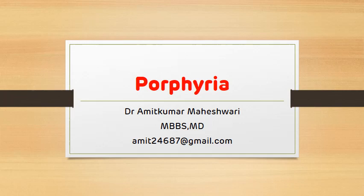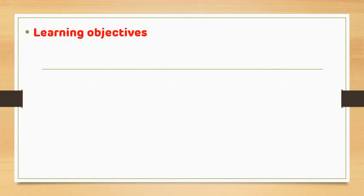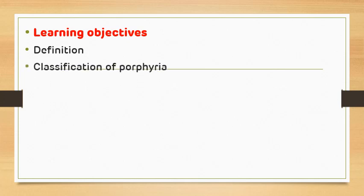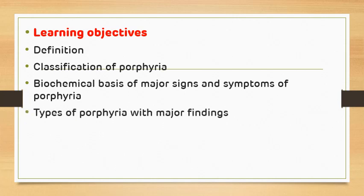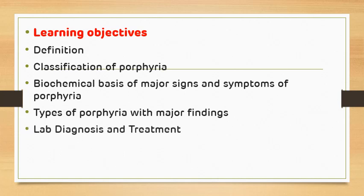So let's see what are the learning objectives for today's topic. First, we will see the definition of porphyria. Then we will see the classification of porphyria. Then we will see the biochemical basis of major signs and symptoms. Then we will see the various types of porphyria with their major findings. Then we will see the lab diagnosis and treatment. And in the last, we will see various multiple choice questions asked in interest examinations.